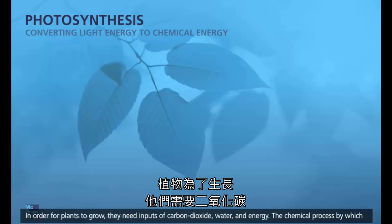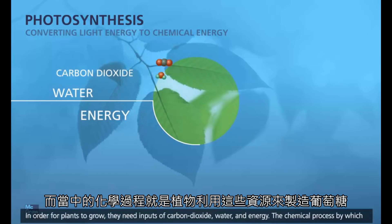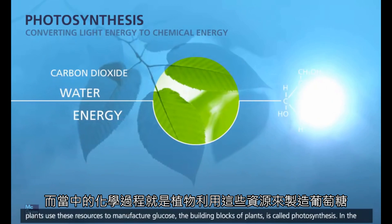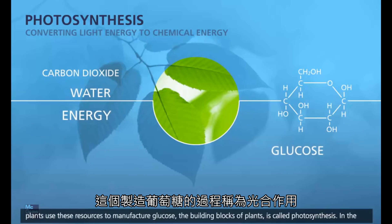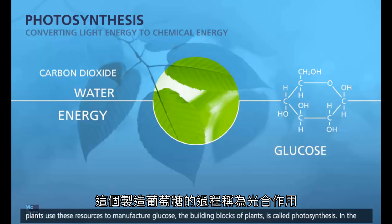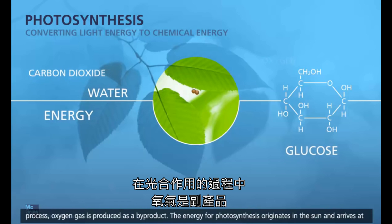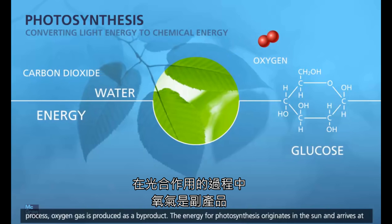In order for plants to grow, they need inputs of carbon dioxide, water, and energy. The chemical process by which plants use these resources to manufacture glucose, the building blocks of plants, is called photosynthesis. In the process, oxygen gas is produced as a byproduct.